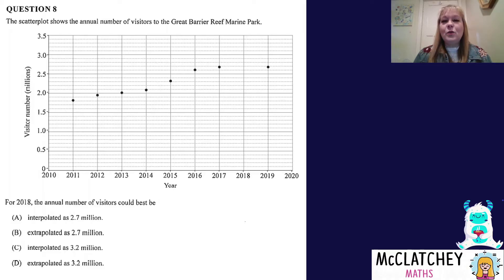Let's look at our question. For 2018, the annual number of visitors could best be, and we've got some choices: interpolation and extrapolation. This is where you need to remember your definitions. Interpolation means inside the data set that you've been given. Extrapolation means you're making predictions into the future or way into the past, basically years before 2010 or years after 2020. In this case, we're asked for 2018. That's inside our data set. So we can eliminate options B and D because they're extrapolations.